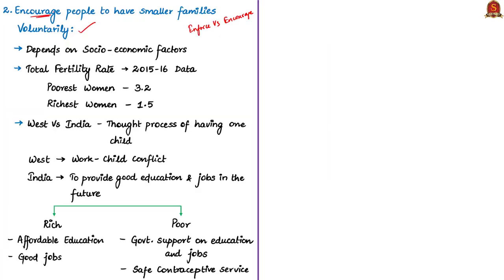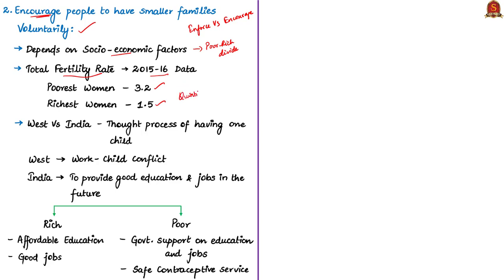The second issue is encouraging people to have smaller families voluntarily, which depends on socioeconomic factors — the poor-rich divide. The author tells that there are huge differences in fertility among different socioeconomic groups. The Total Fertility Rate (TFR) refers to the total number of children born or likely to be born to a woman of childbearing age in her lifetime. In 2015-16, the TFR for the poorest women was 3.2, whereas it was just 1.5 for the richest quintile. A quintile means five equal portions.